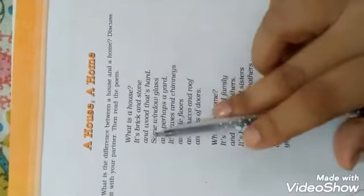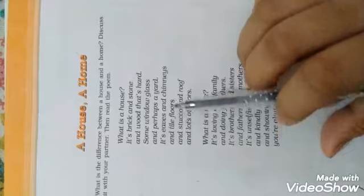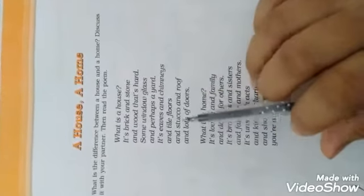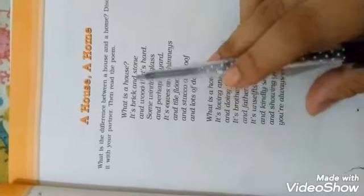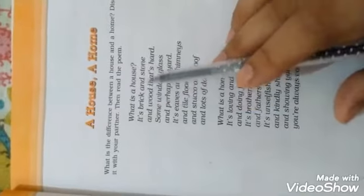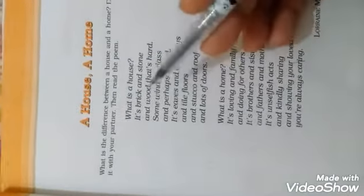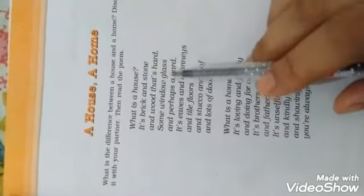It's brick and stone and wood that's hard, some windows, glass and perhaps a yard. It's eaves and chimneys and tiles, floors and stucco and roof and lots of doors. So this point is true. The poem is written that the house is brick and stone. House means brick, built of brick and stone. We create brick material from cement. There are some elements found in stone. And wood that's hard, and house that's very hard.